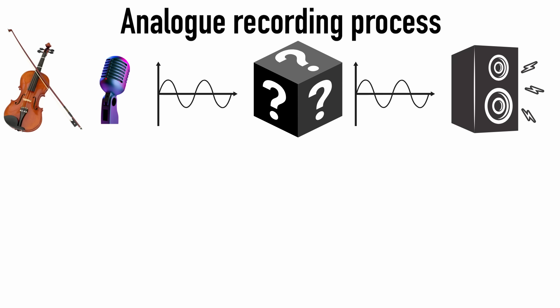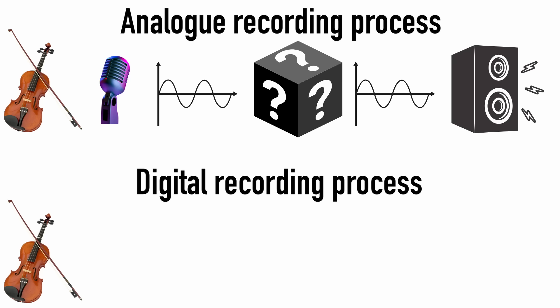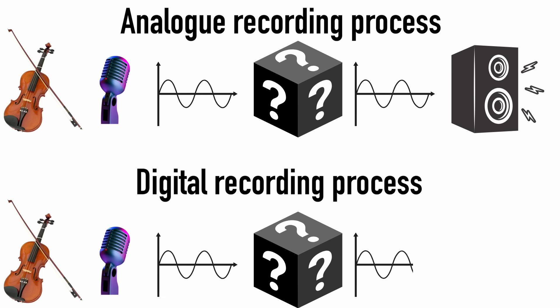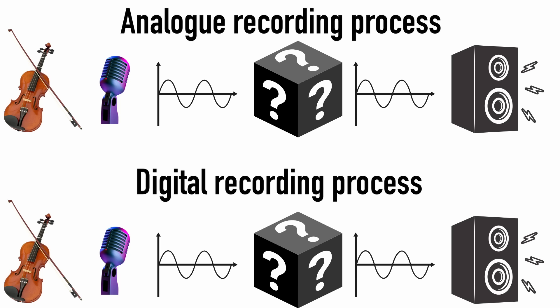What does the digital recording process look like? Sound waves are transduced by a microphone into a voltage, we store that voltage somehow, then reproduce a voltage, send it to an amplifier and speakers, which produce sound waves, and we hear the sound again. The two processes look awfully similar. Everything before and after the storage implementation is identical — the only difference is the method in which we decide to store the information.